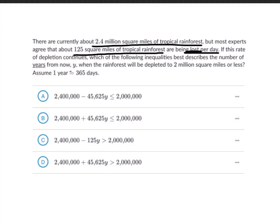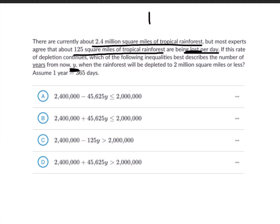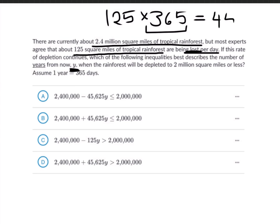They told us the variable is y for years. It's not fair to say we're decreasing by 125 directly, because we're not losing 125 every year — we're losing 125 every day. So to fix this, we multiply 125 by 365 days to get the actual number lost every single year. Plugging this into a calculator gives us 45,625 square miles lost per year.